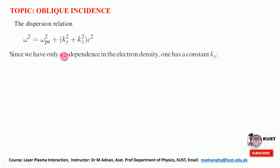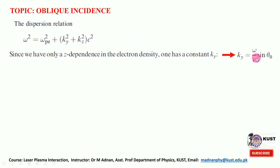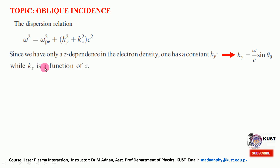Since we have only a z-dependence in the electron density — the gradient lies only in the z direction — ky is constant. That constant ky equals omega over c times sine theta_0, where theta_0 is the angle at which the incoming electromagnetic wave is incident on the plasma slab. kz is a function of z; the propagation along z is affected by the density gradients.